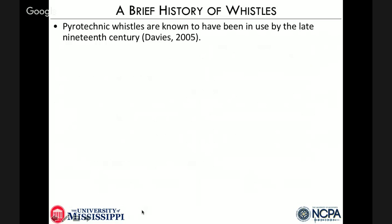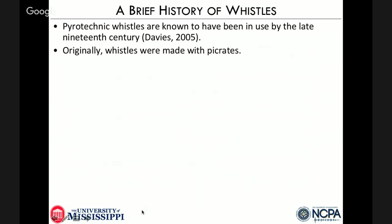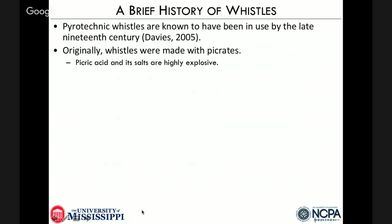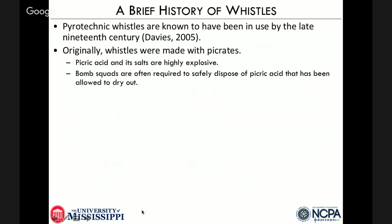Before looking at the measurement, let's take a brief walk through the history of whistles. They were known to have been used by the 19th century, probably earlier. Originally, whistles were made with picrates — picric acid and its salts — which have the problem of being very highly explosive and extremely dangerous to work with. You can search for picric acid on YouTube and the first result is a news story of a bomb squad being called to dispose of it in a college storeroom, because if it's allowed to dry out, even just twisting the lid off the container can cause it to explode. Fortunately, we figured out a way to make whistles without that.